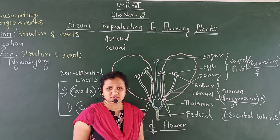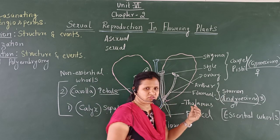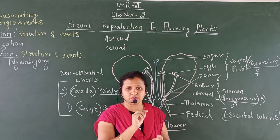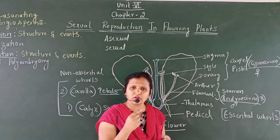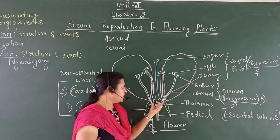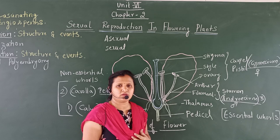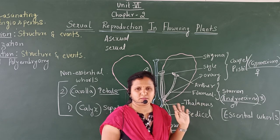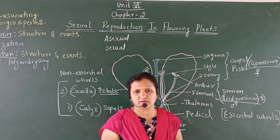In our future classes, in pre-fertilization structures and events, we will be talking about the stamen — taking one stamen and discussing how pollen grains are produced in the anther and how male gametes are produced. Then for the carpel — ovary, style, and stigma — the female gametes are produced inside the ovary. We will take up a single carpel, how the gametes are produced and how the fusion will take place. All that we will study in our further classes in pre-fertilization structures and events.